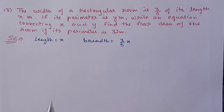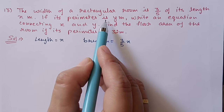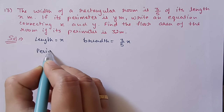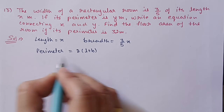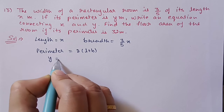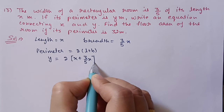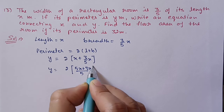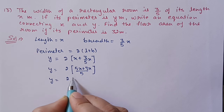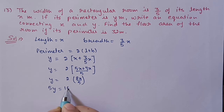Length is given as x and breadth is 3/5 of x, so breadth is (3/5)x. Perimeter equals 2(L + B). Substituting, perimeter y equals 2(x + 3x/5). Taking LCM: 2 × (5x + 3x)/5 = 2 × 8x/5 = 16x/5. So finally, 5y equals 16x. This is the relation between y and x.